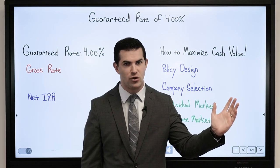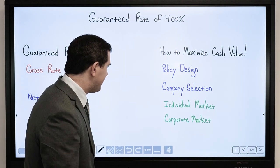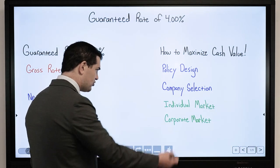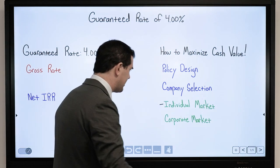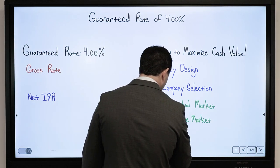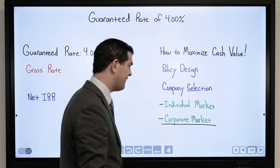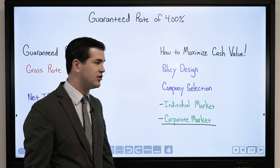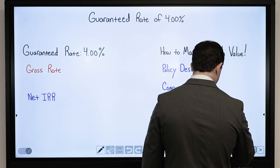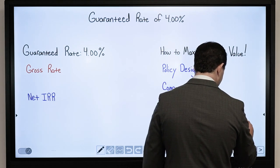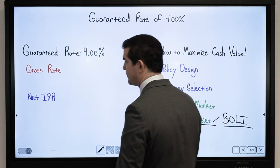And probably more. That's consistent in the individual marketplace — good to look at that. But then in the corporate marketplace, a ton of emphasis is put on the guarantees. We worked with a bank earlier this year setting up a BOLI product — bank-owned life insurance policy.